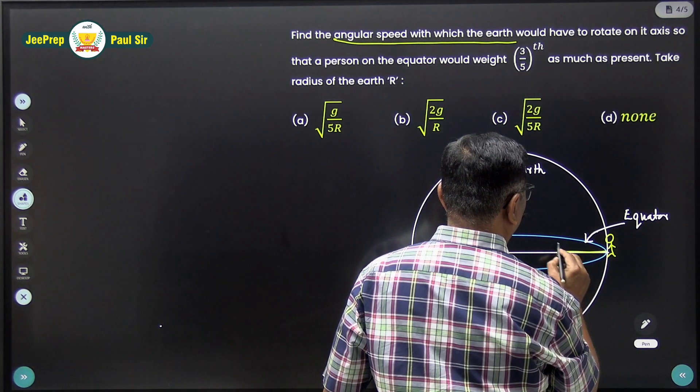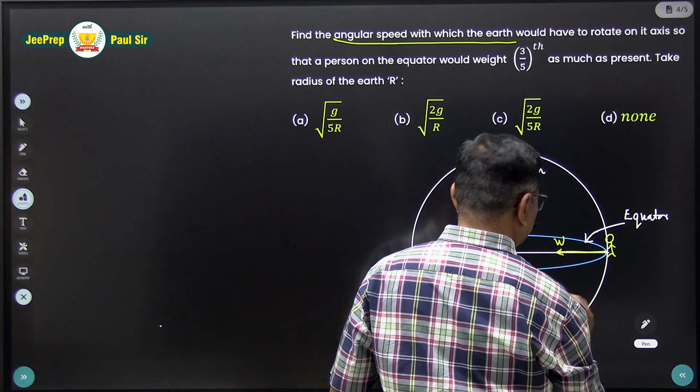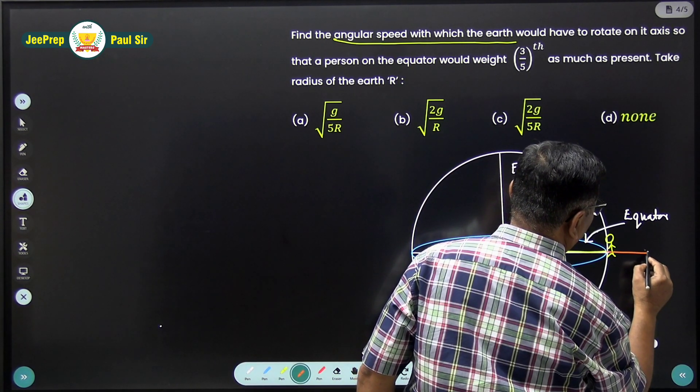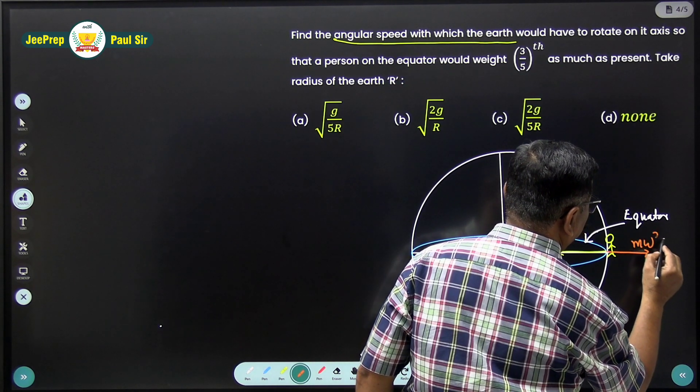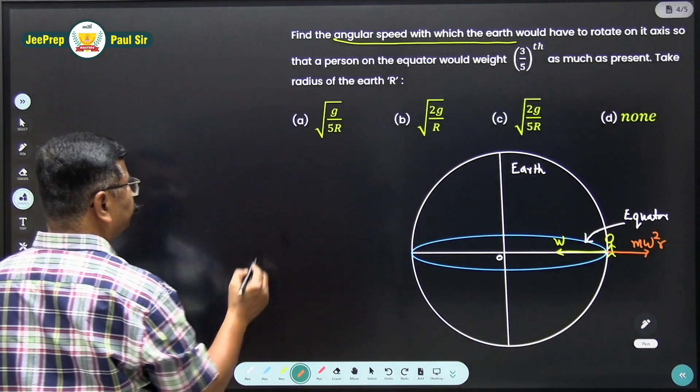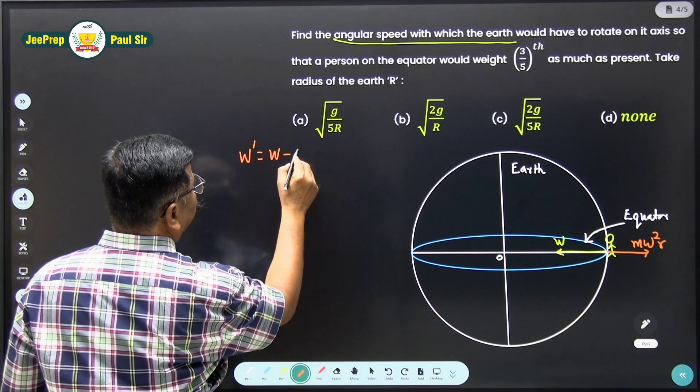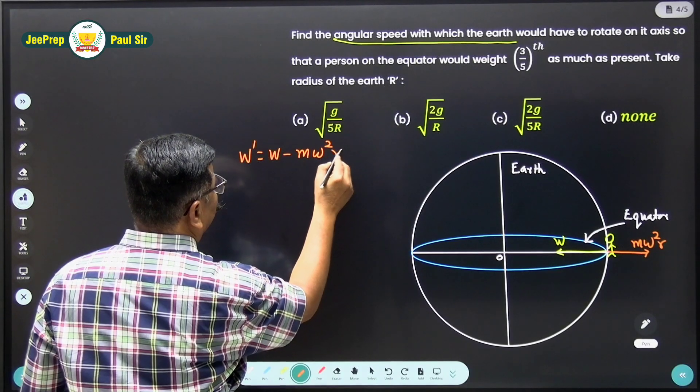So its weight W is directed in this direction while the centrifugal force will be in this direction. Therefore, net weight will be W' equals W minus M omega square r.